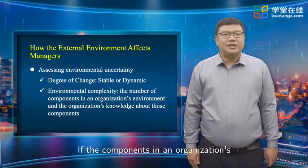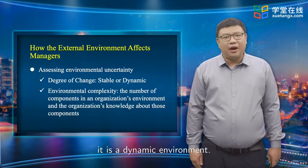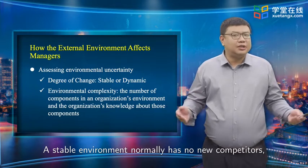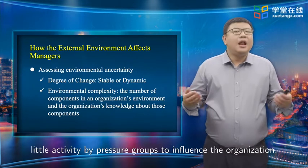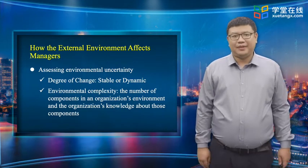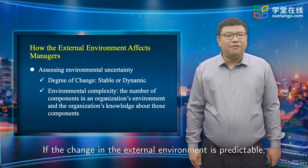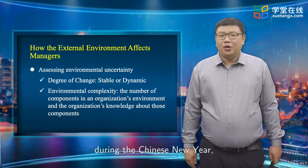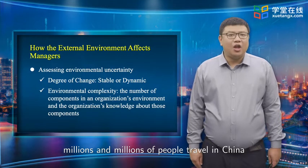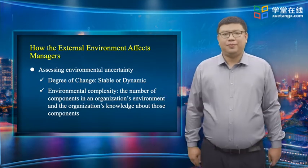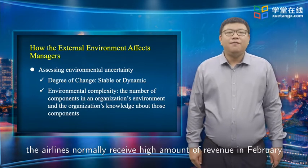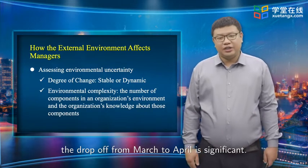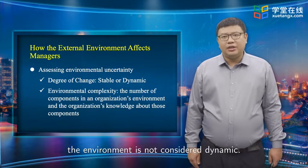If the components in an organization's environment change frequently, it is a dynamic environment; if change is minimal, it is a stable one. A stable environment normally has no new competitors, few technological breakthroughs by current competitors, and little activity by pressure groups. If the change in the external environment is predictable, it is not considered dynamic. For example, during Chinese New Year, millions of people travel in China, so airlines normally receive high revenue in February due to large numbers of passengers; however, the drop from March to April is significant. Because such change is predictable, the environment is not considered dynamic.